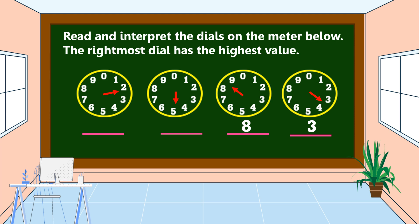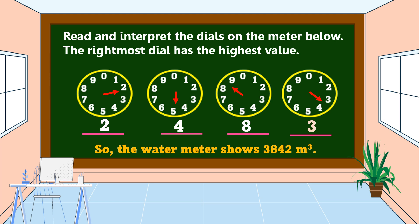In this dial, the arrow is pointing to five. But looking at the dial to the right, it has not yet passed zero, so we record this as four. In the next dial, the arrow is pointing to two, and we record it as two. Writing the numbers from right to left, the water meter shows 3,842 cubic meters.